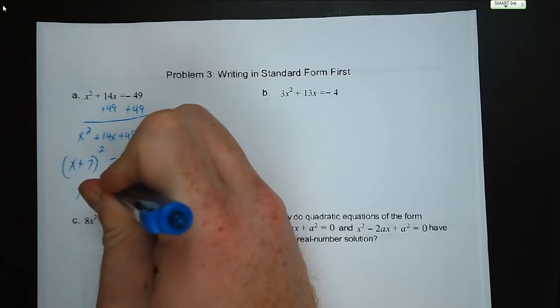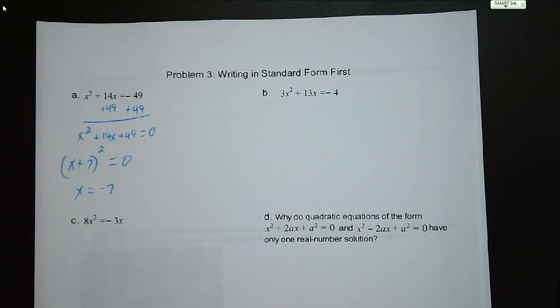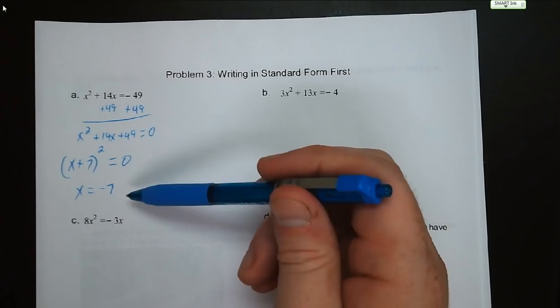This is a case where there is only one solution: negative 7, which happens to be the vertex. You may notice that if it's a perfect square trinomial, you're only going to have one possible solution.